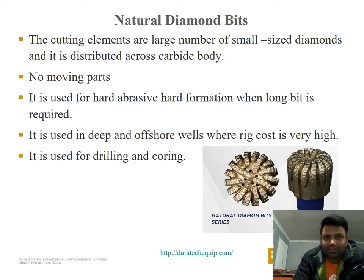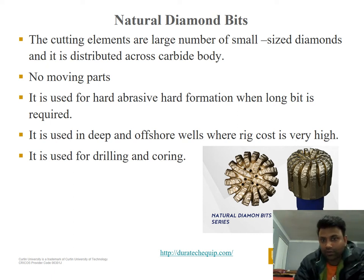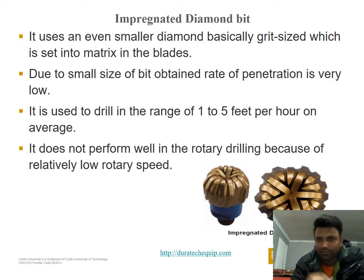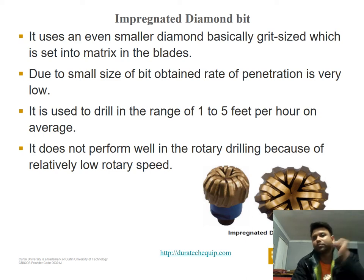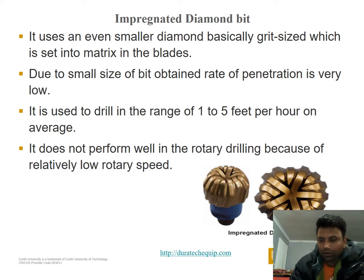Natural diamond bits use a large number of diamonds distributed across a carbide body. They have no moving parts, are used for hard, abrasive formations where long bit life is required, and are used in deep and offshore wells — though cost is very high. Impregnated diamond bits use very small diamond grit set into a matrix in the blades. Due to the small size, rate of penetration is very low — typically one to five feet per hour. They do not perform well in soft formations due to relatively low ROP.